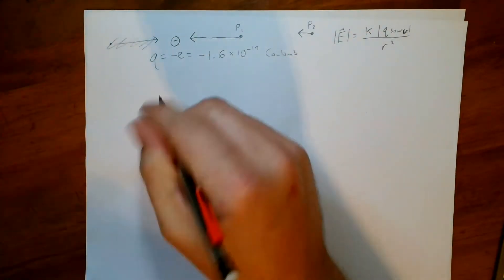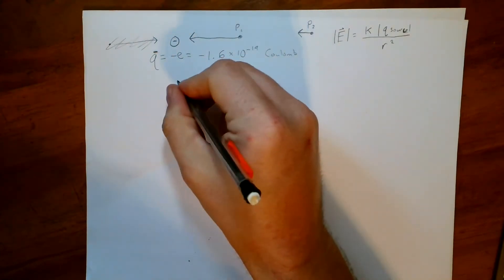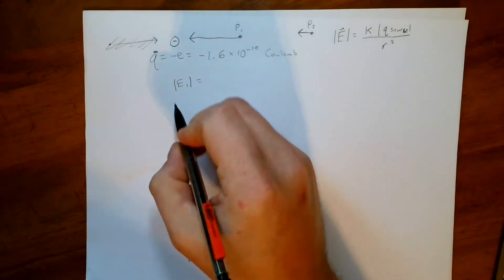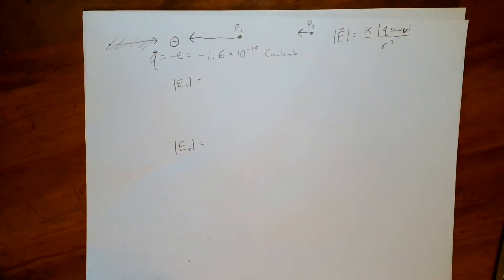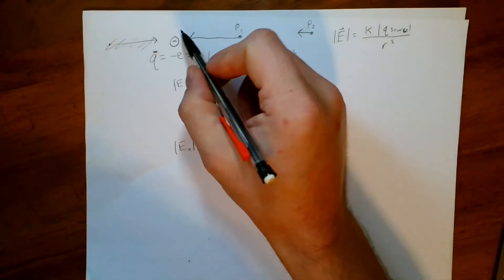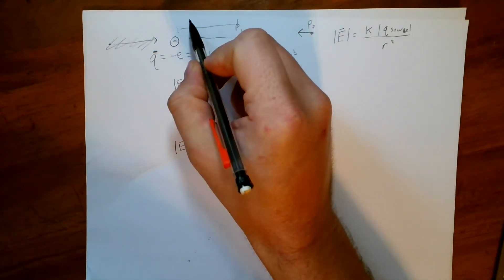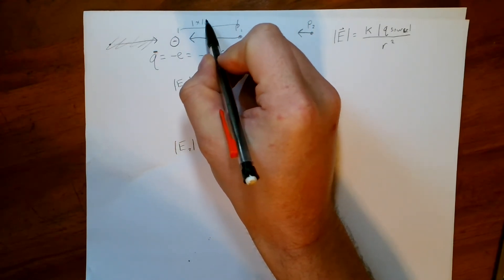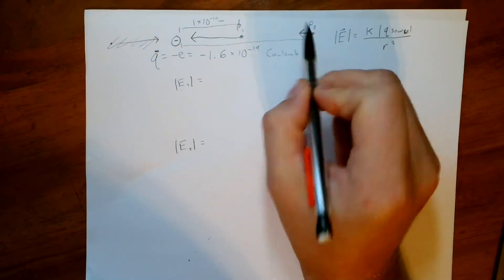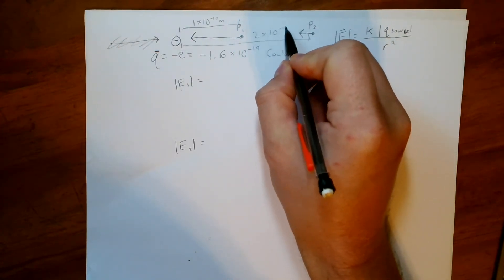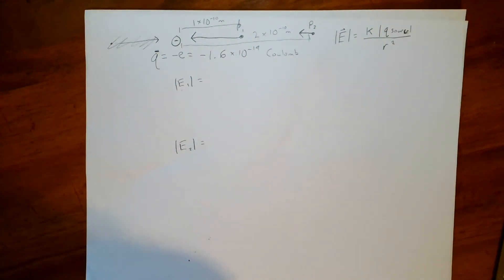There you go. Now we want to find what is the electric field strength at point one. What is the magnitude? And then what is the electric field strength at point two? What's the magnitude there? So let's just put this into our equation. Let me pull my numbers one more time. This distance they tell us from here to here is one times ten to the negative ten meters. And so this distance here would be, since it's twice as far away, would be two times ten to the negative ten meters.